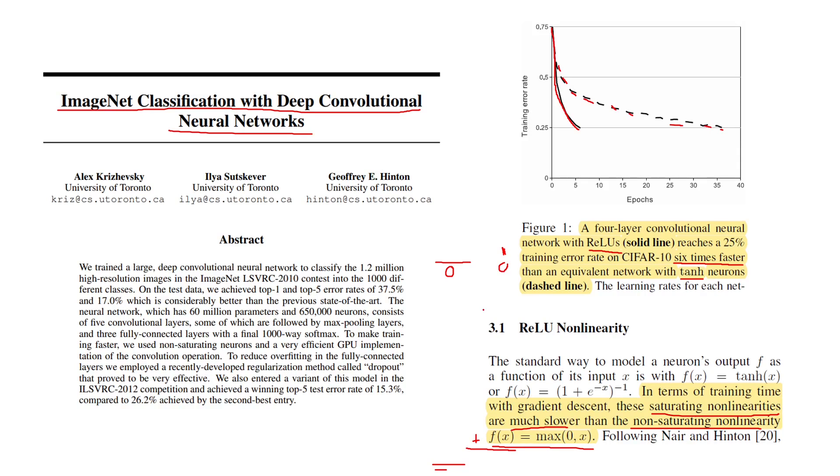In addition there is another advantage of using ReLU over tanh or sigmoid, and this is that computing the operation maximum between zero and x is much faster than computing the operation e to the power of x that is used in both tanh and sigmoid functions.